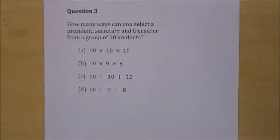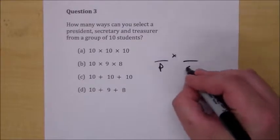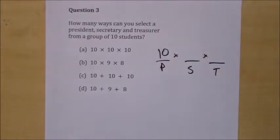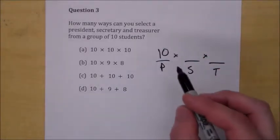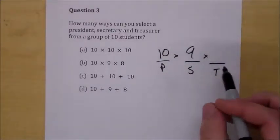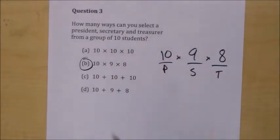Question three: how many ways can you select a president, secretary, and treasurer from a group of 10 students? This is again a classic permutation question because order matters — it matters who the president is, who the secretary is, and who the treasurer is. How many choices do you have for president? Ten. For secretary? You already chose a president, so that person is off the list — nine choices. For treasurer, eight choices. So the answer is 10 × 9 × 8.